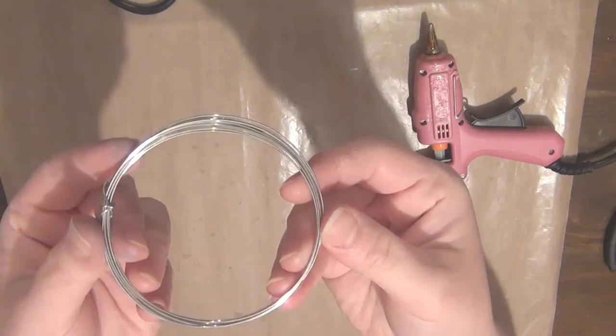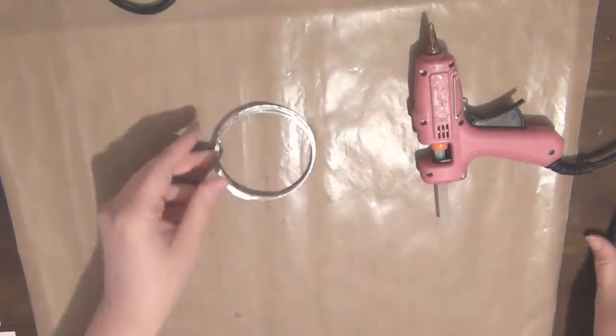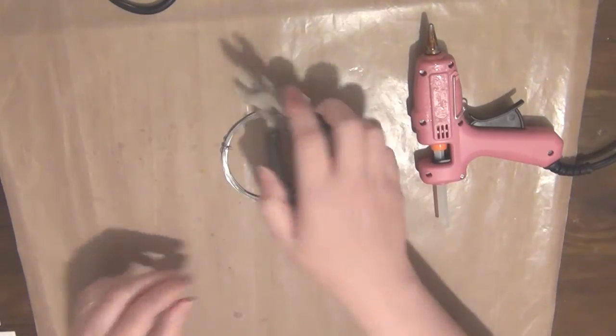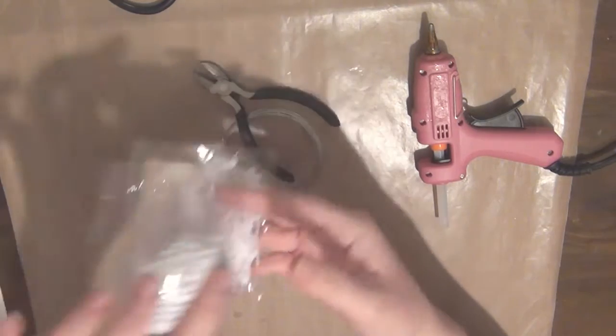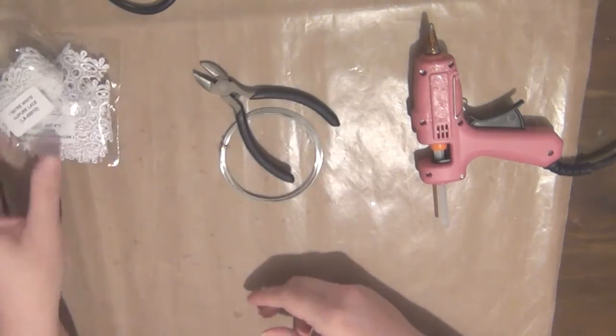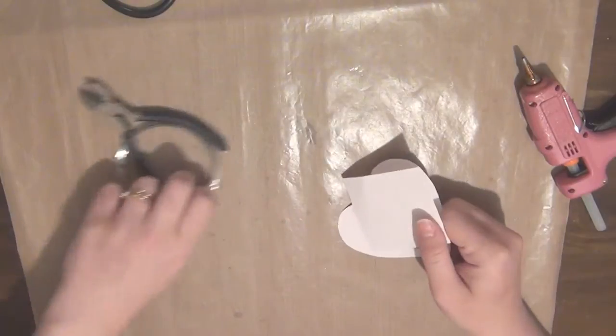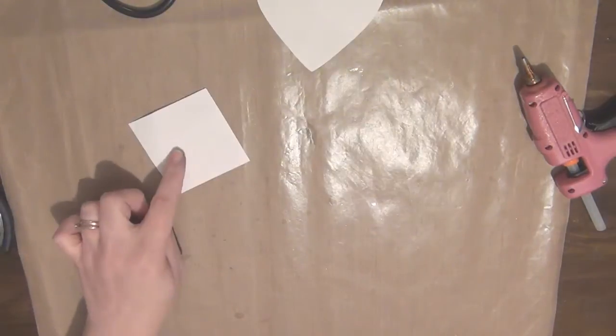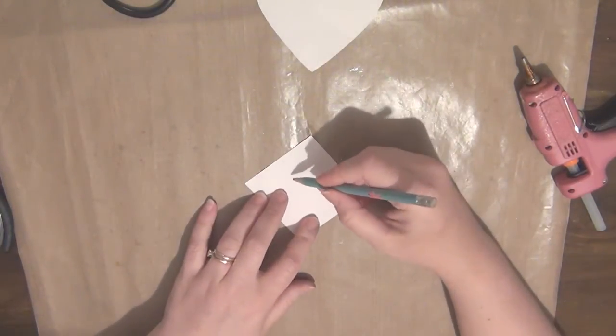I'll be using a craft mat, a glue gun, some wire, some wire cutting pliers, and some Wild Orchid Crafts laces. I've also got some paper and a pencil here which I'm using to sketch out my designs.